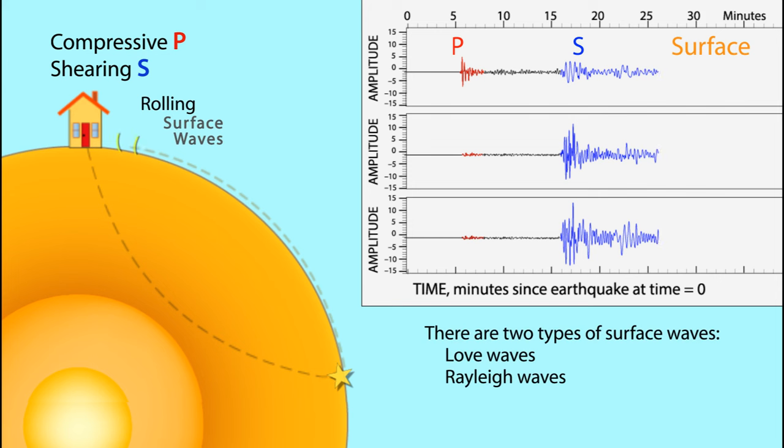The slower surface waves, such as Love and Rayleigh waves, move in a more complex undulating pattern, and thus show up on all three components.